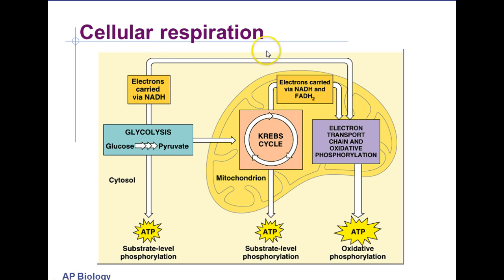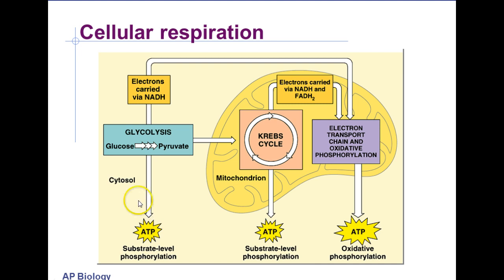These electrons move to the electron transport chain to reform ATP during oxidative phosphorylation. Also note that the other electron carrier, FADH2, will also be used in the electron transport chain in oxidative phosphorylation — the reforming of ATP. Some ATP will be used in this process, and two of those are produced in glycolysis, serving as the energy source for the Krebs cycle and electron transport chain.